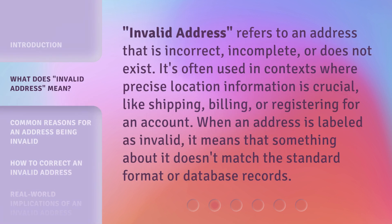Invalid Address refers to an address that is incorrect, incomplete, or does not exist. It's often used in contexts where precise location information is crucial, like shipping, billing, or registering for an account. When an address is labeled as Invalid, it means that something about it doesn't match the standard format or database records.